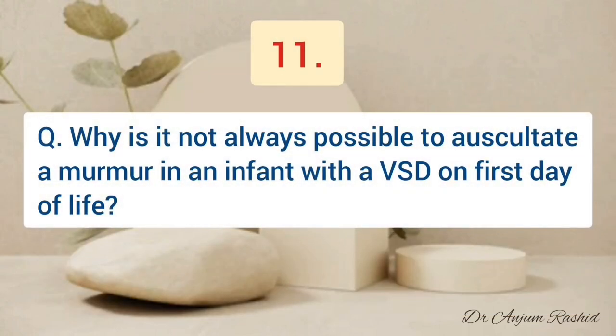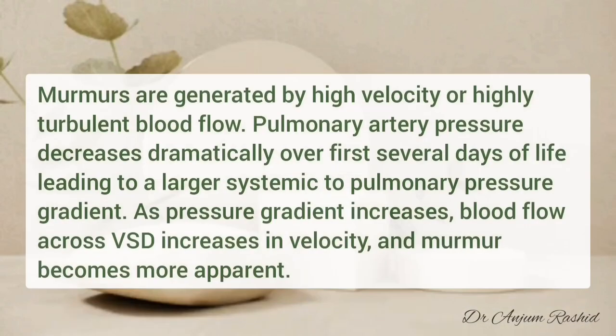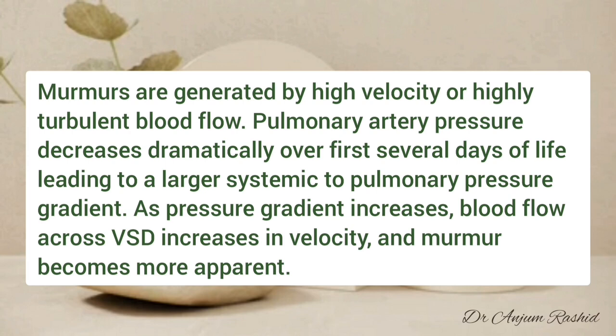Question 11: why is it not always possible to auscultate a murmur in an infant with a ventricular septal defect on the first day of life? Murmurs are generated by high-velocity or highly turbulent blood flow. Pulmonary artery pressure decreases dramatically over the first several days of life, leading to a larger systemic-to-pulmonary pressure gradient. As the pressure gradient increases, blood flow across the ventricular septal defect increases in velocity and the murmur becomes more prominent.